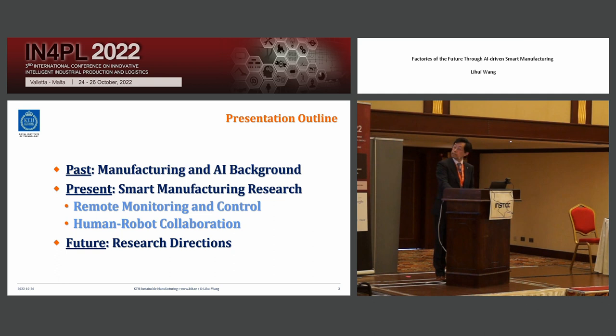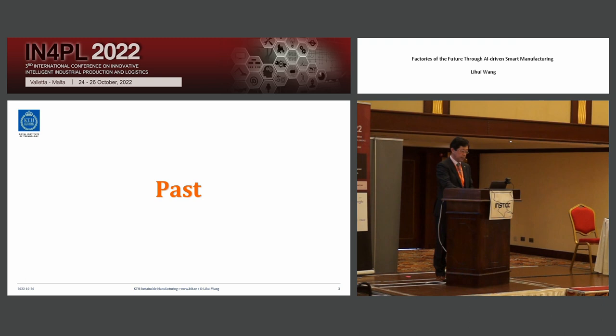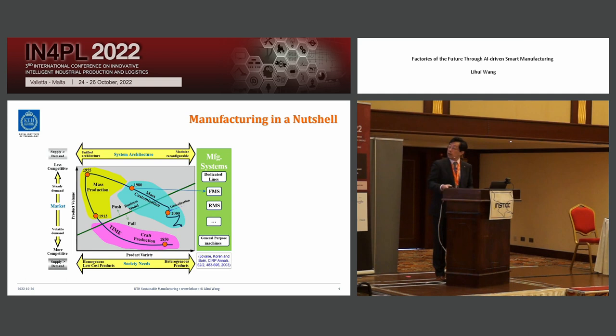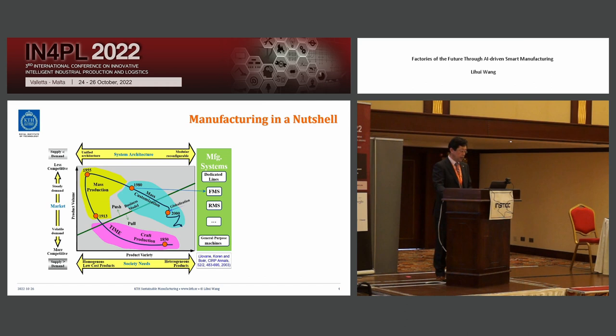Let's look at the past. Manufacturing history is not that long. This chart shows the evolution of manufacturing. The horizontal axis is the product variety. The vertical axis is the product volume. The black line in the center is the evolution of manufacturing paradigms over time. Initially, in the pink area,